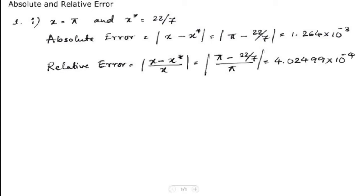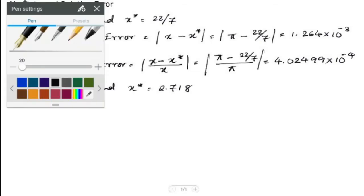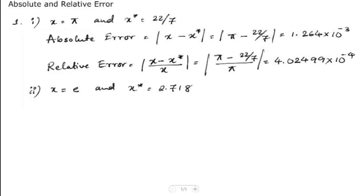Now working on the second example, we have the x value equal to e and x star equal to 2.718. Maybe let me use a different color here so that we don't get confused later on.